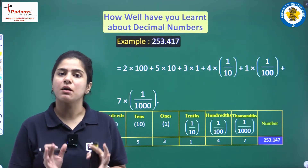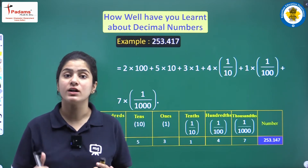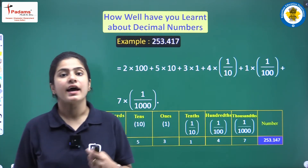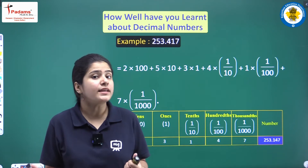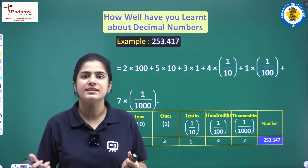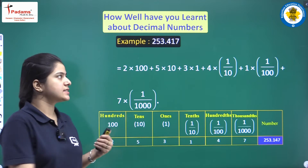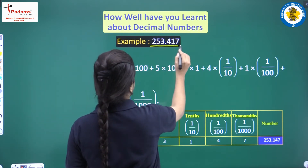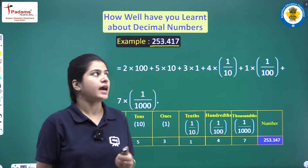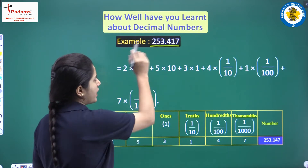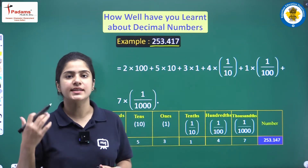Students, the numbers that have a decimal in themselves are called decimal numbers. Today we are representing and learning about decimal numbers. Here is a decimal number like 253.417, and this point is called the decimal.